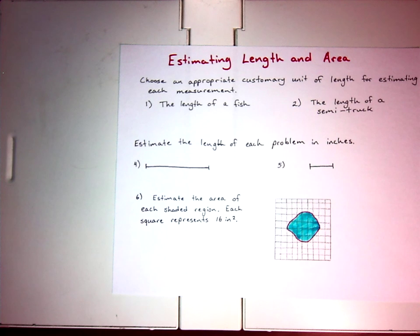The first one says choose an appropriate customary unit of length for estimating each measurement. Customary units, that's talking about the standard units we use in the United States. So if we're talking about length, we're talking about feet, yards, inches. Things that we are not talking about would be centimeters, millimeters, kilometers. We're talking about customary units of measure.